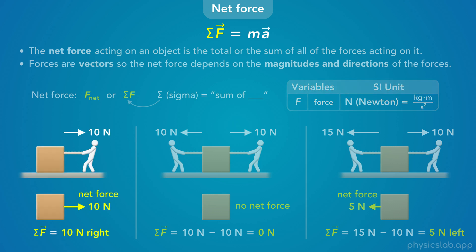In this example, there's only one force acting on the object, so that's also the net force: 10 newtons to the right. In this next example, the net force is 10 newtons minus 10 newtons, which is 0 newtons — the forces have the same magnitude and act in opposite directions, so they cancel out. In a third example, the net force is 15 newtons minus 10 newtons, which is 5 newtons to the left.